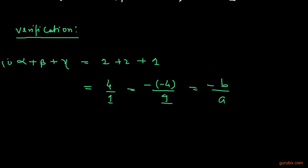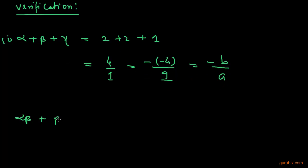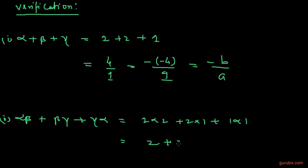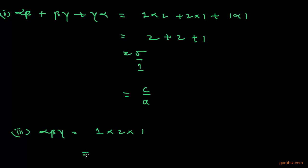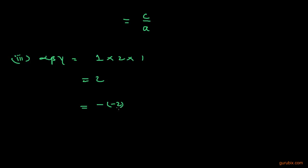Next, we find the sum of products of pairs of zeros: alpha·beta plus beta·gamma plus gamma·alpha. Calculating, we get 1 into 2 plus 2 into 1 plus 1 into 1, which gives 2 plus 2 plus 1, equals 5. This can be written as 5 over 1, which equals c over a. So all the relationships are verified, and this is the solution of the question. Thank you.